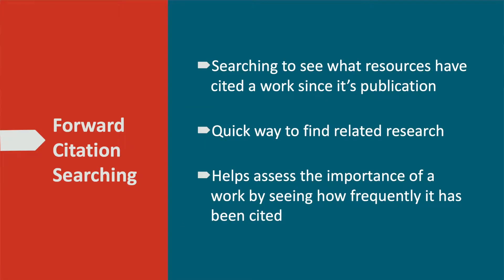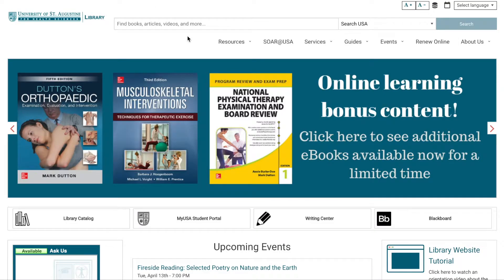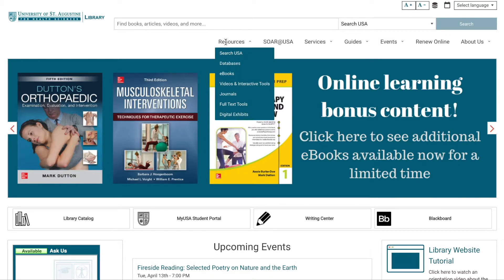Forward citation searching is when you search to see what resources have cited a work since its publication. This is not only a quick way to find related research, but it's also a way to help you assess the importance of a work by seeing how frequently it's been cited. This video will walk you through how to do this in Web of Science.